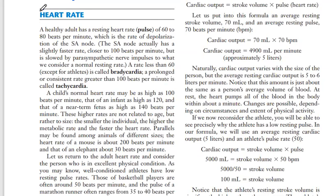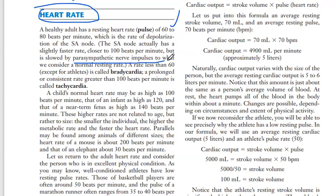Let's talk about heartbeat. What is heartbeat and what is the normal value? A healthy adult has a heart rate of 60 to 80 beats per minute — this is the rate of depolarization of the SA node. The SA node actually has a slightly faster rate, closer to 100 beats per minute, but is slowed by parasympathetic nerve impulses to what we consider a normal resting rate. A rate less than 60 is called bradycardia; a rate greater than 100 beats per minute is called tachycardia.